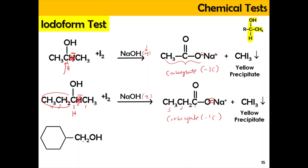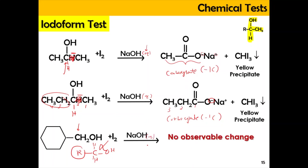For this final alcohol — with C attached to OH, C attached to H, and C attached to H, connected to a cyclohexane ring — it is not a methyl carbonyl, because the methyl carbonyl must have COH, CCH3, and CH. When reacted with iodine and aqueous NaOH, there will be no observable changes and no yellow precipitate is formed. That's all for today's video. See you again some other time. Bye!